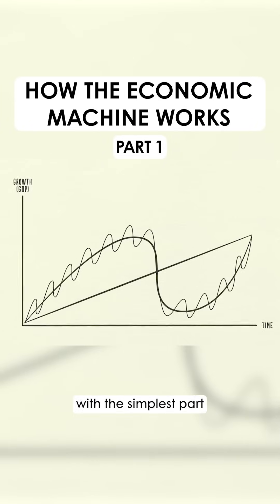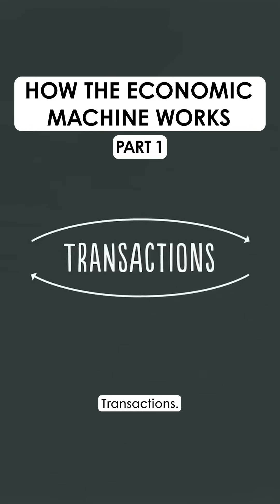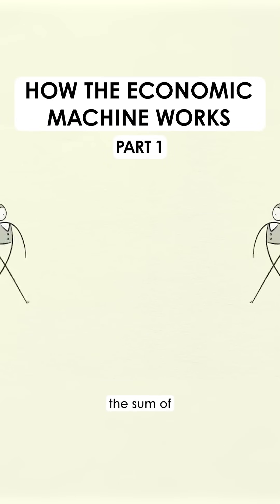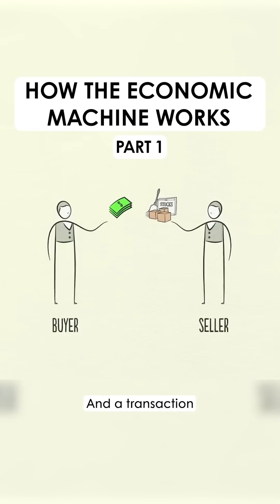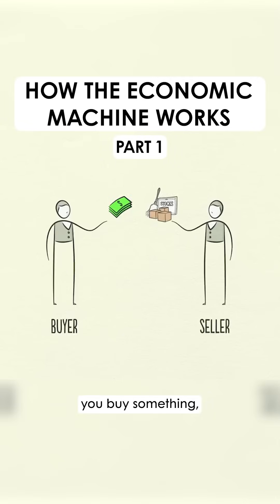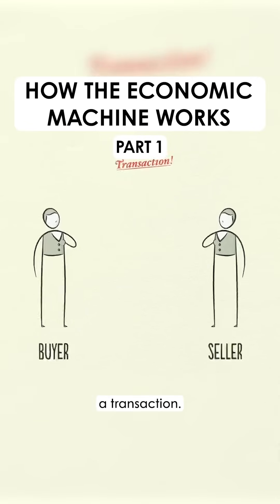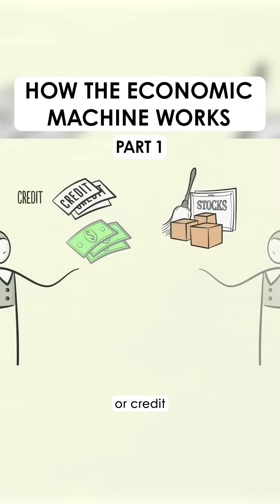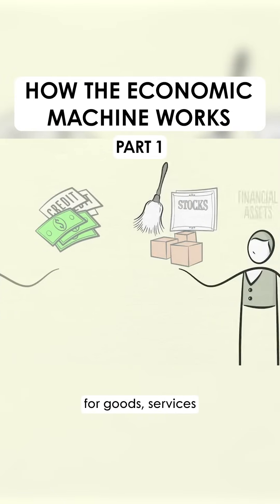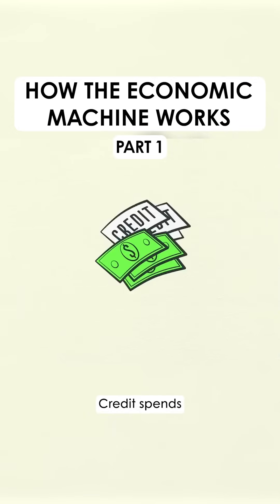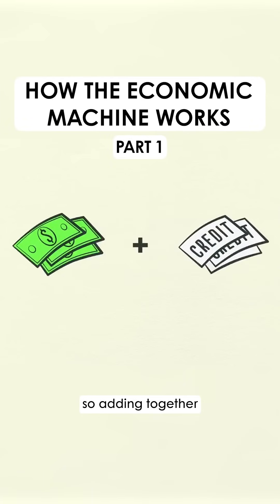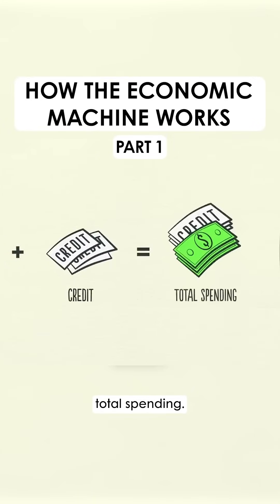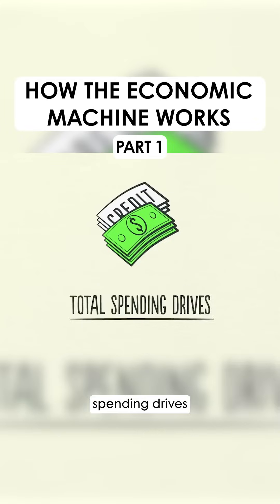Let's start with the simplest part of the economy: transactions. An economy is simply the sum of the transactions that make it up, and a transaction is a very simple thing. You make transactions all the time. Every time you buy something, you create a transaction. Each transaction consists of a buyer exchanging money or credit with a seller for goods, services, or financial assets. Credit spends just like money, so adding together the money spent and the amount of credit spent, you can know the total spending. The total amount of spending drives the economy.